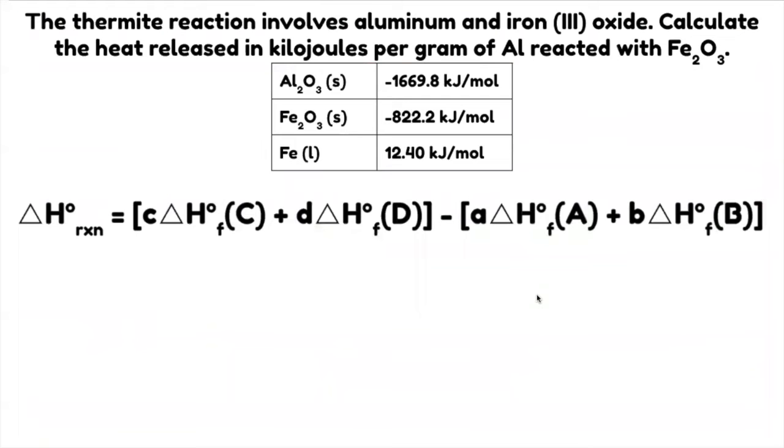The thermite reaction involves aluminum and iron three oxide. Calculate the heat released in kilojoules per gram of aluminum reacted with Fe2O3. What are we going to do first? You only need to follow the formula. Since the equation is not given, you need to write the equation first. The reaction involves aluminum plus Fe2O3. It says here that it will produce Al2O3 and Fe. It's a single replacement reaction.